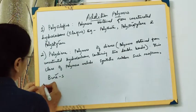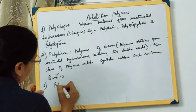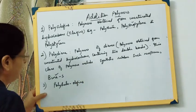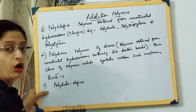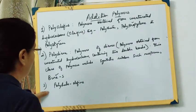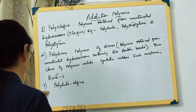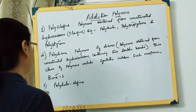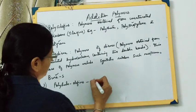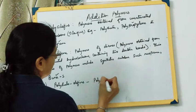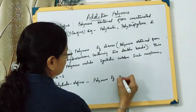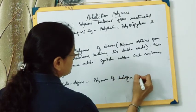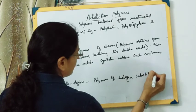The next type is polyhalo-olefins. These are polymers of halogen-substituted alkenes. The polymer chain contains a halogen group and is based on a carbon-to-carbon double bond — an unsaturated hydrocarbon.